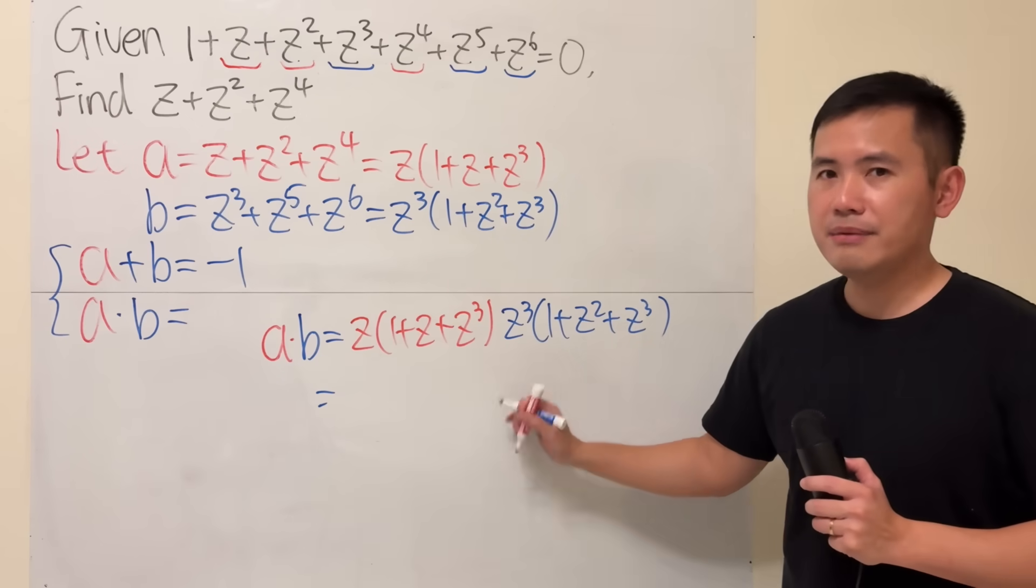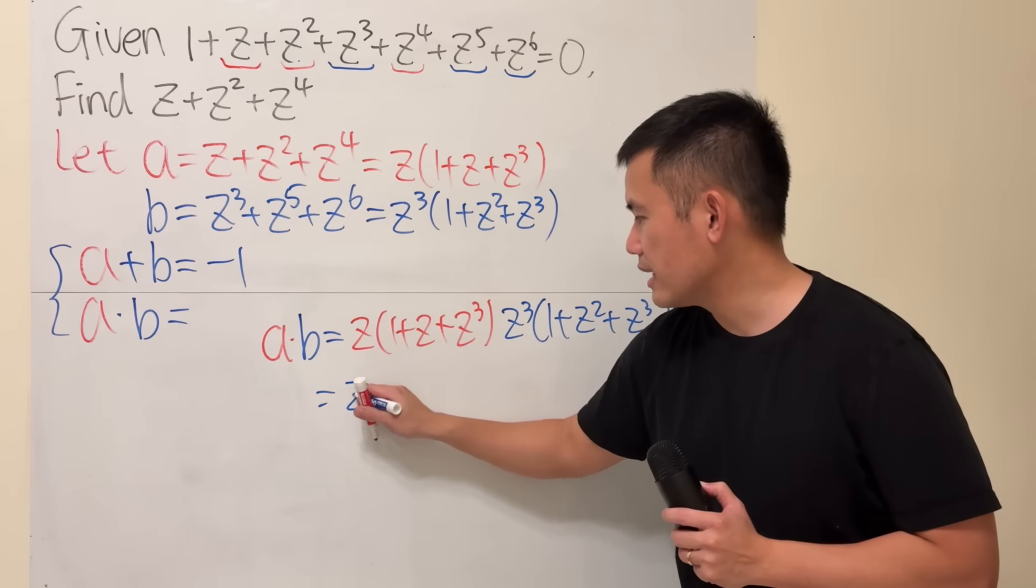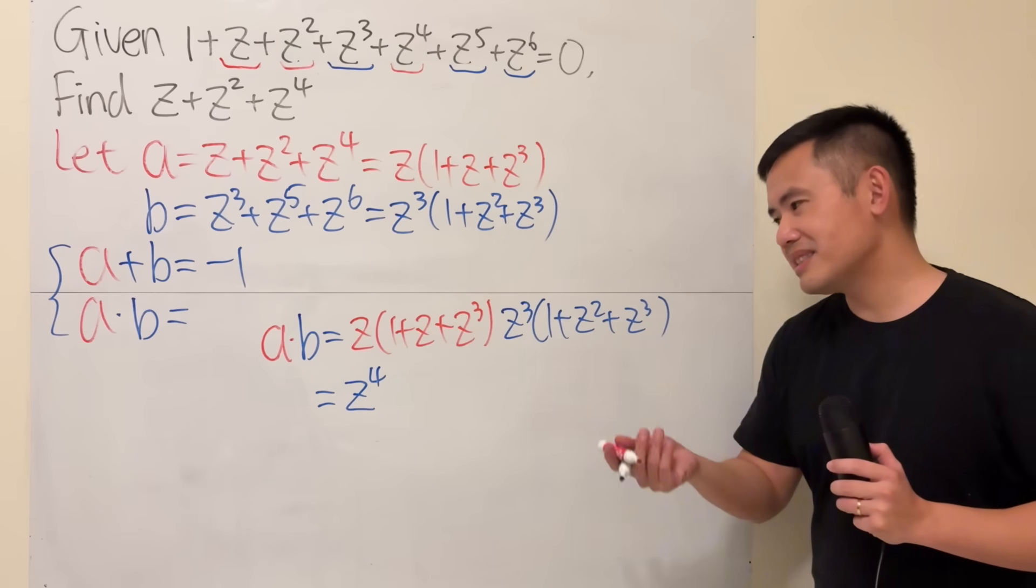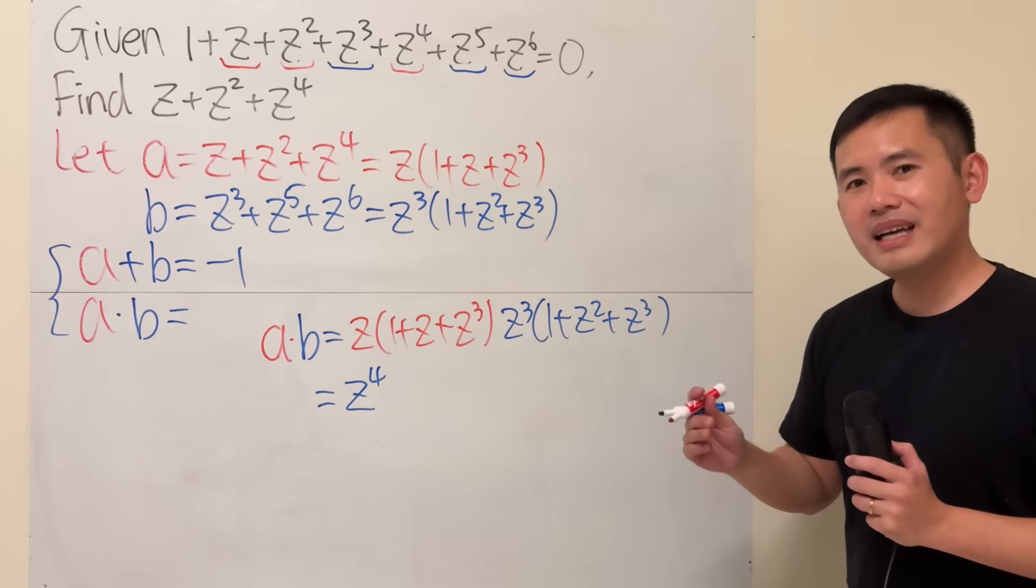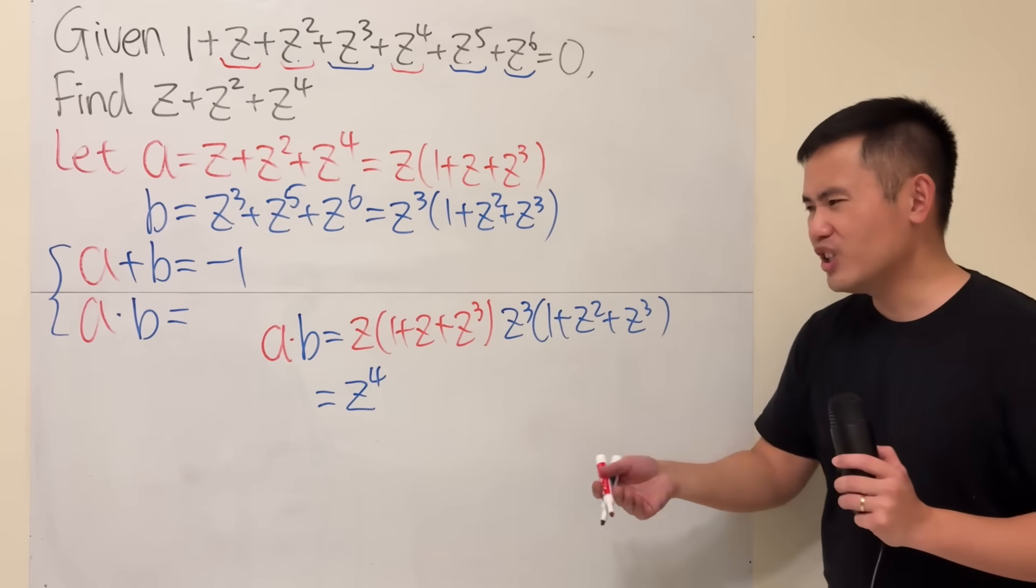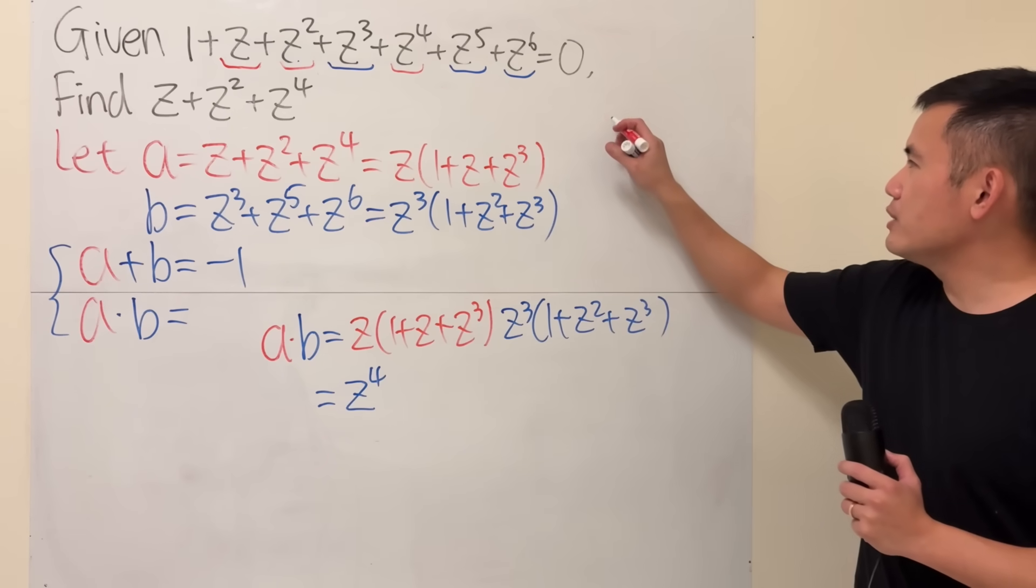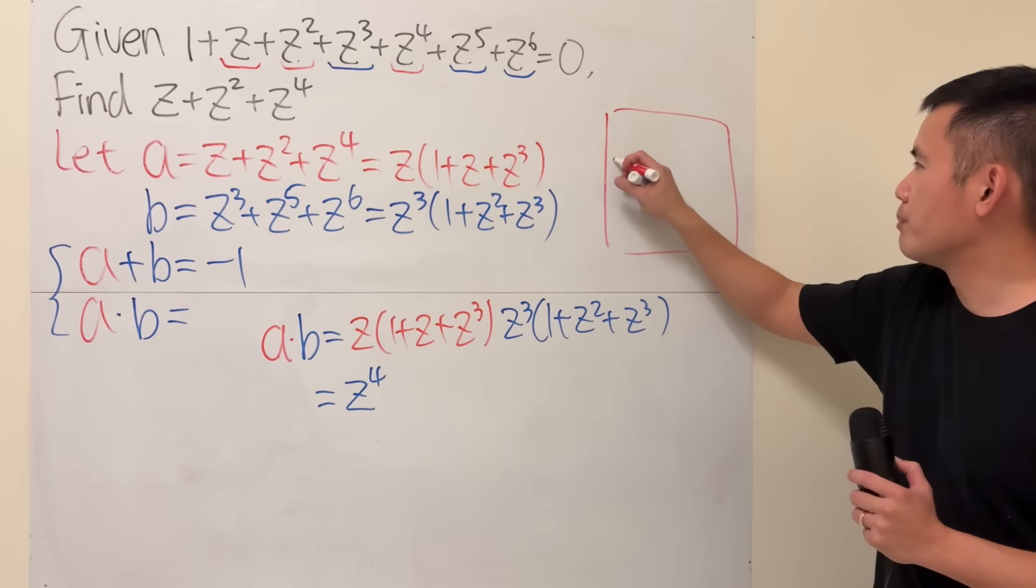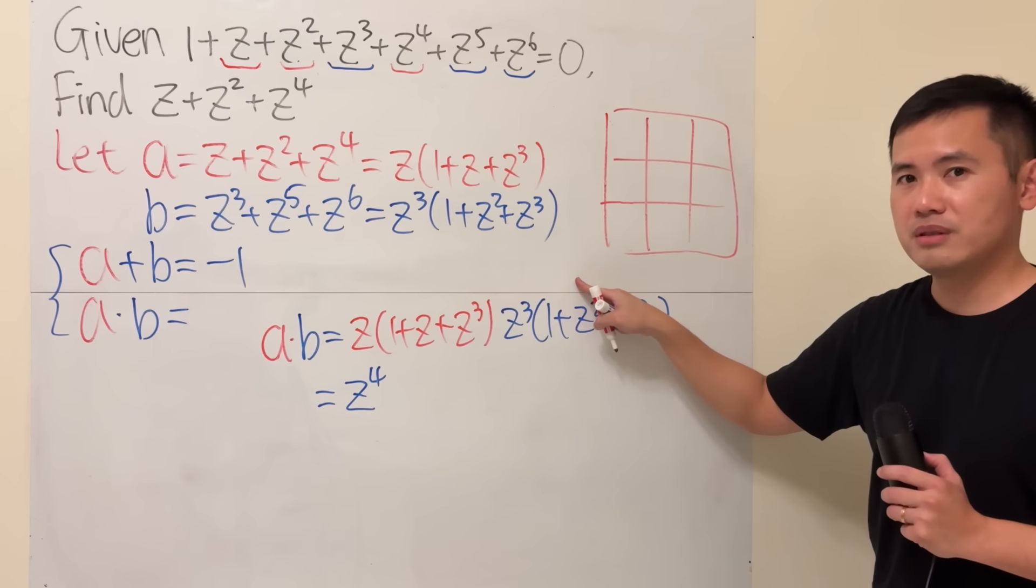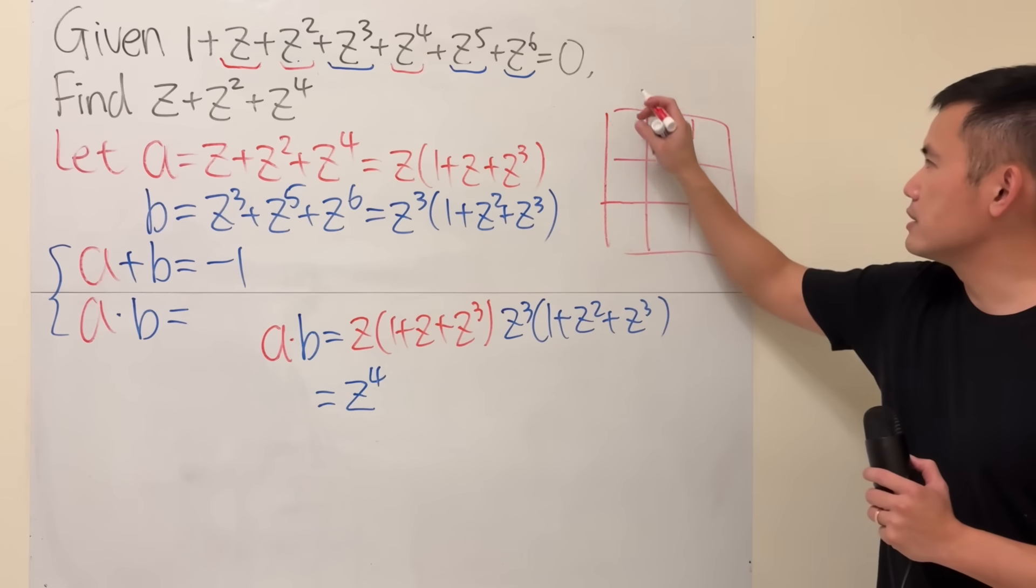So this times that is just z to the fourth power. That's nice and easy. However, to multiply this and that, it's some work. And I would recommend you guys to do the following if you want to be a little bit more organized. Go ahead and just draw the tic-tac-toe box. Because we have three terms and then multiply with three terms.